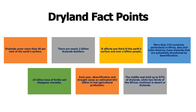There are some key facts about dry lands which later get converted into deserts. Dry lands cover more than 40% of the Earth's surface. There are nearly 2 billion dry land dwellers — populations living in dry lands. Desertification affects one-third of the Earth's surface and over a billion people. More than 110 countries, particularly in Africa, Asia, and Latin America, have dry lands that are potentially threatened by desertification.